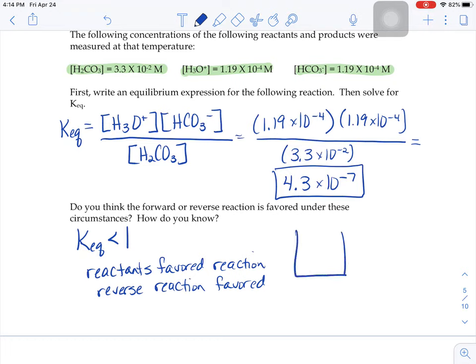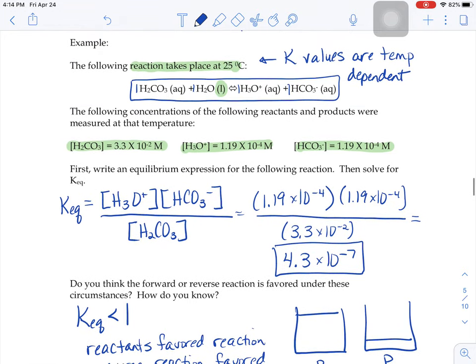And if you think about it from that dueling beakers demo perspective, it's saying that you have lots of reactants, very little product, once equilibrium has been established. And you can see that in the molarities themselves, because the molarities of your products are to the negative fourth power, and yet the molarity of your reactants is to the negative second power. The products are much smaller.